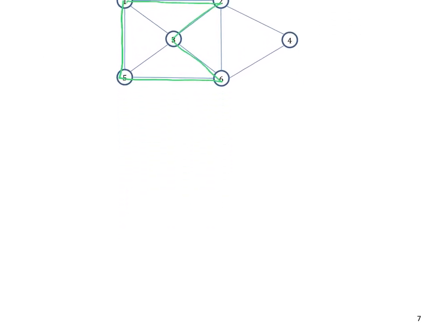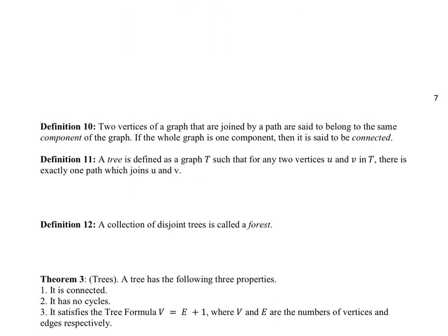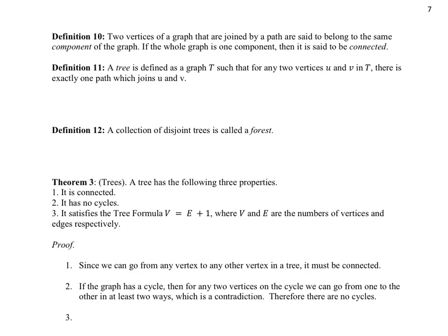Alright, so now we're ready to build up our definition of a tree. Just one more definition to go, and that's the definition of being connected. So we call a graph connected if it's all in one clump. If every vertex is joined to another vertex by a path, then you say that it's on a connected component of the graph. If there's just one connected component in your graph, then you say that the entire graph is connected.